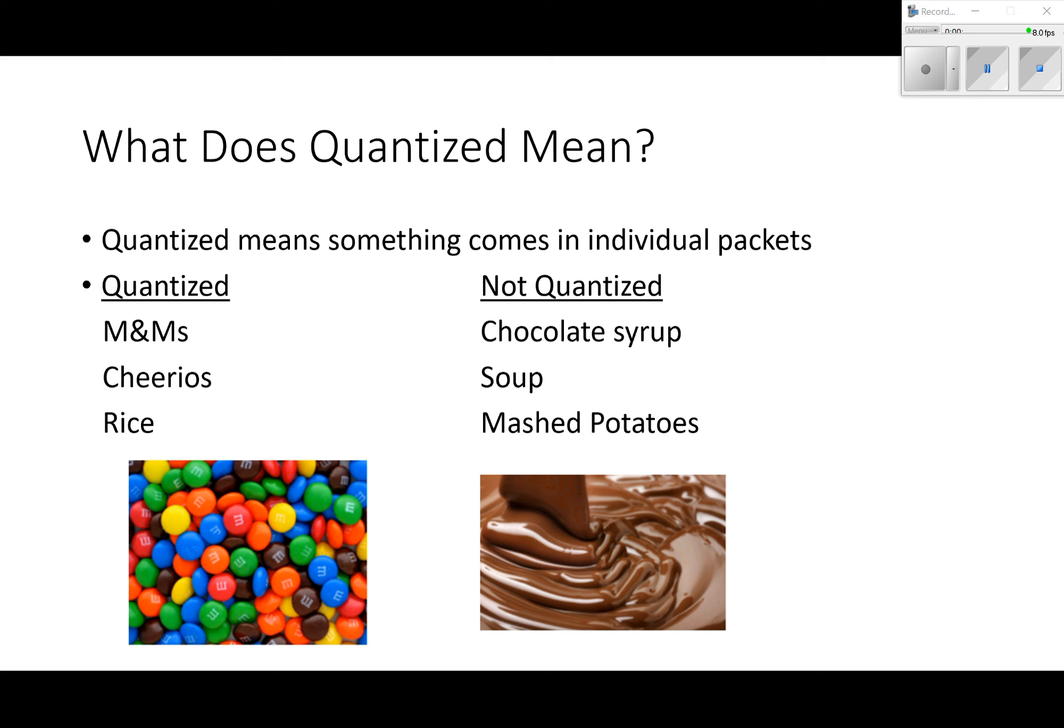Cheerios is quantized - you can count your number of Cheerios. Soup, you can't count your number of soup in a bowl. I mean, it's one bowl of soup, you can't count the number of soup in the bowl. You could count the number of Cheerios in a bowl, so Cheerios are quantized, soup is not quantized. Rice - takes a long time to count your rice, but you could do it if you wanted to. Mashed potatoes, you could not count it. So that's the difference between quantized and not quantized.